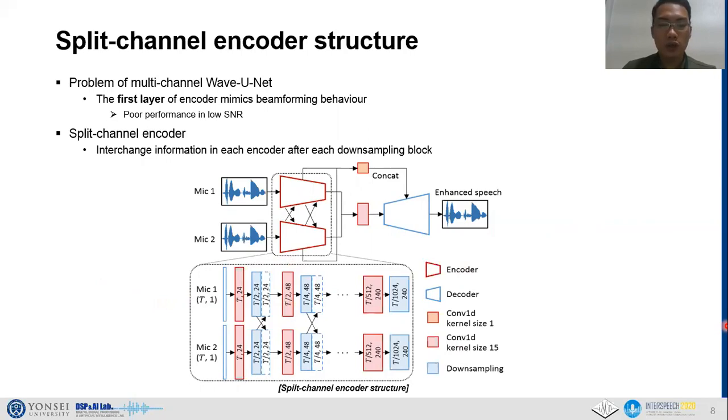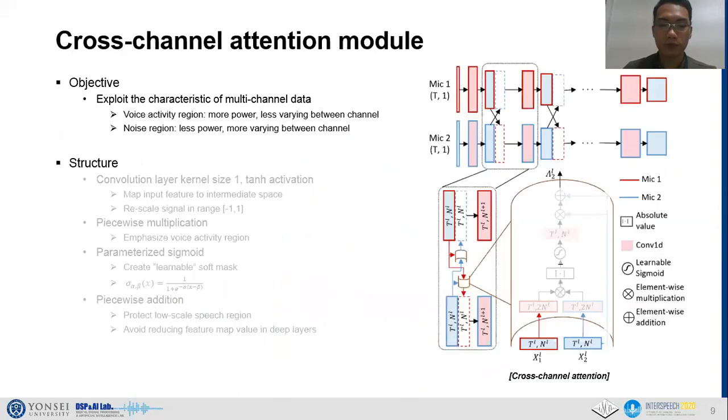In each decoding layer, feature maps extracted from the different encoders are then combined together by 1D convolution layer with size 1, instead of using a direct skip connection between the same level of layers as the baseline Wave-U-Net.